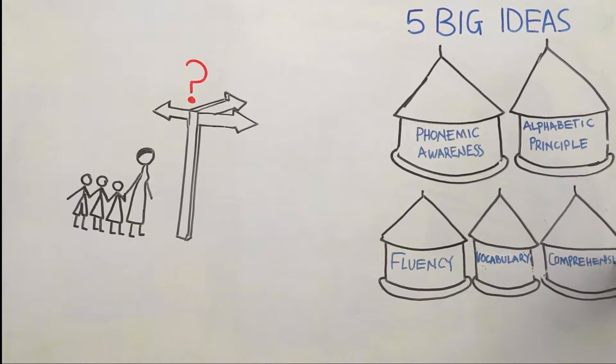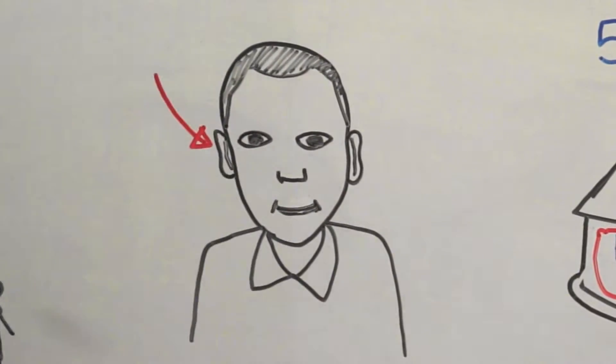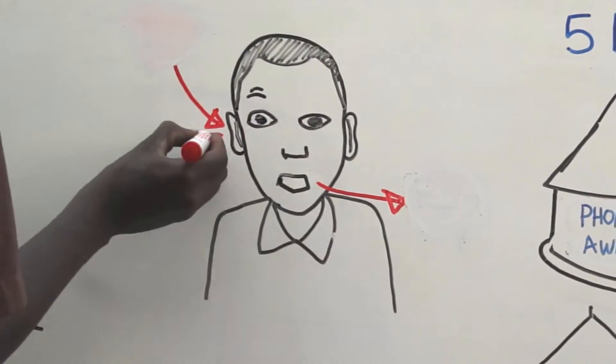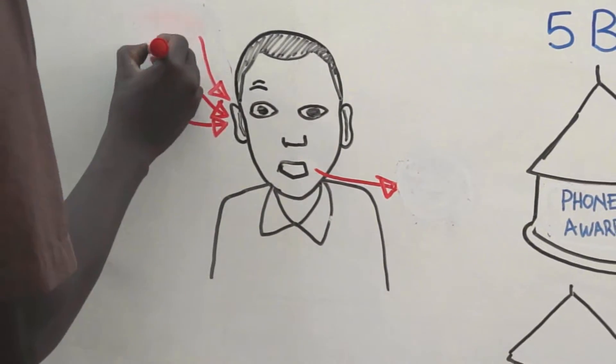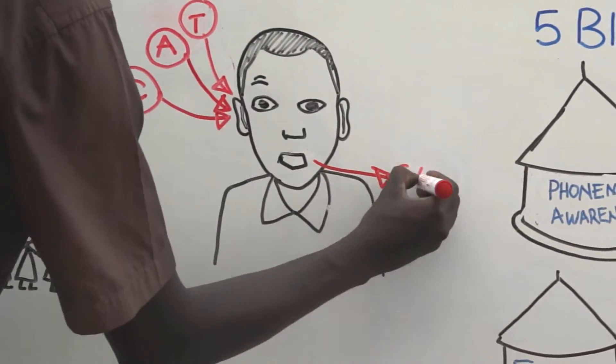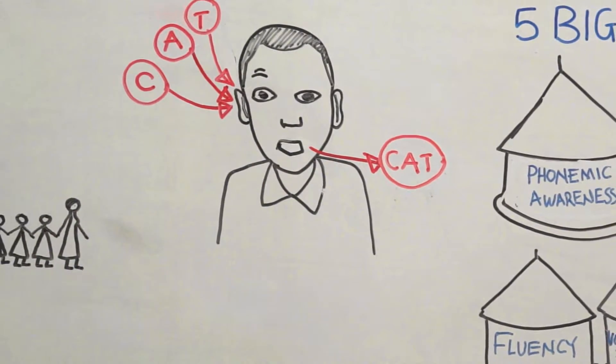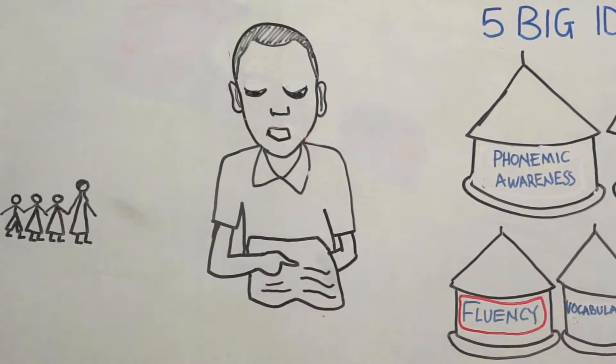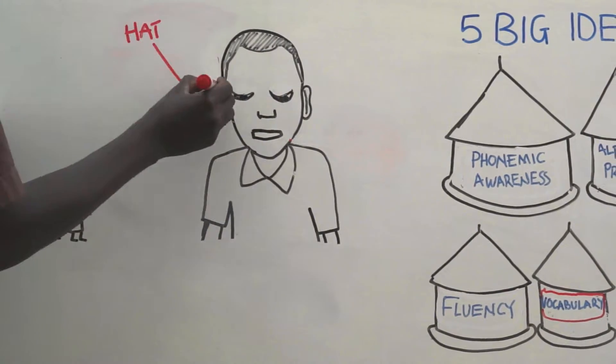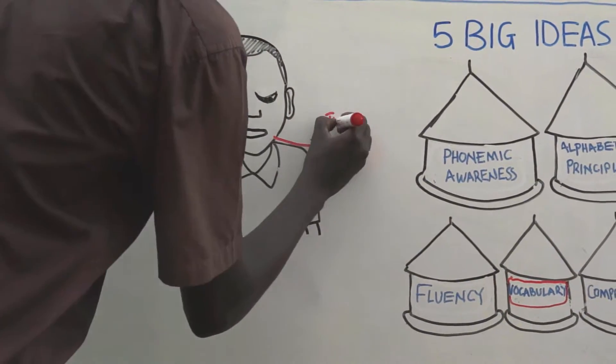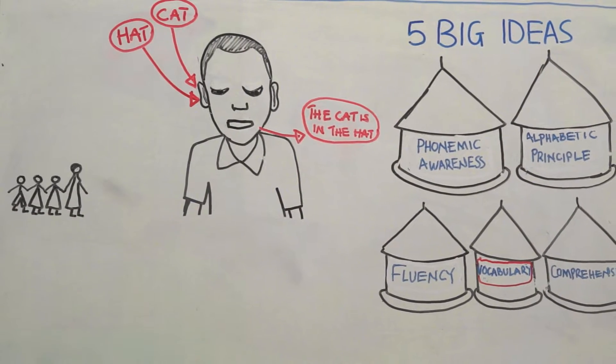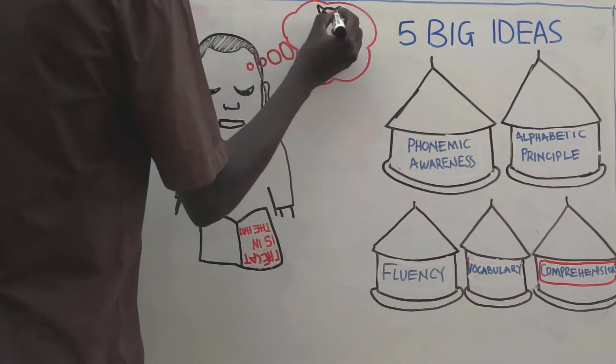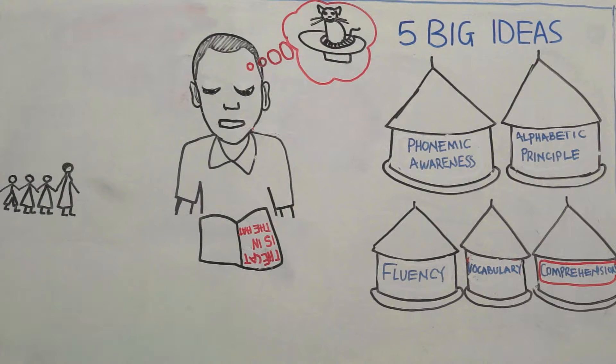Phonemic awareness is the ability to hear and manipulate sounds in words. Alphabetic principle is the ability to connect sounds with letters and use these sounds to form words. Fluency is the ability to read words in connected texts with accuracy and speed. Vocabulary is the ability to understand and use words to make meaning.